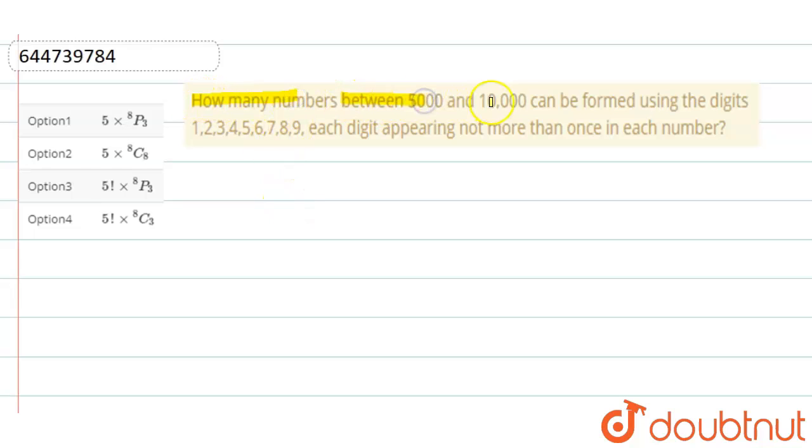Hello friends, question is: How many numbers between 5000 and 10,000 can be formed using the digits 1, 2, 3, 4, 5, 6, 7, 8, 9, each digit appearing not more than once in each number? So between 5000 and 10,000...